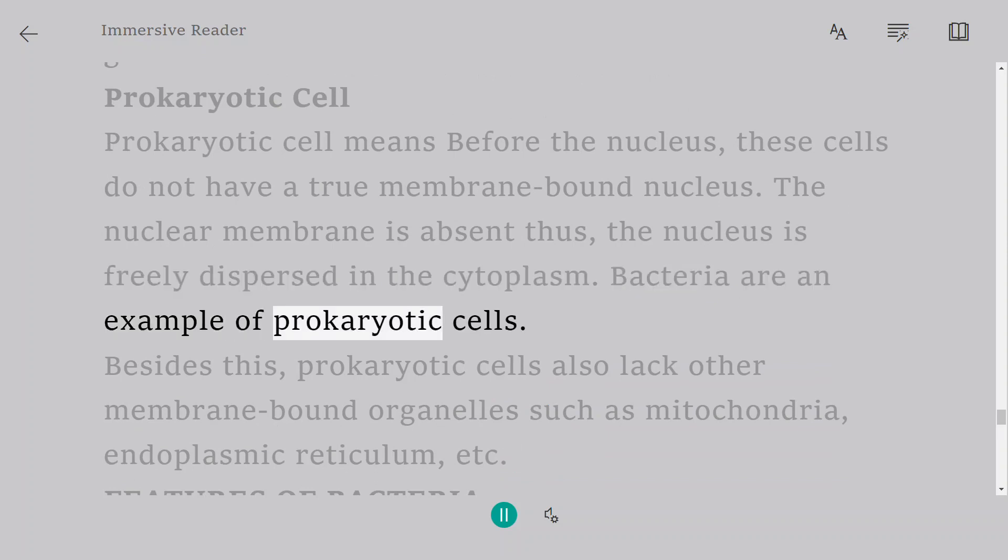Bacteria are an example of prokaryotic cells. Besides this, prokaryotic cells also lack other membrane-bound organelles such as mitochondria, endoplasmic reticulum, etc.